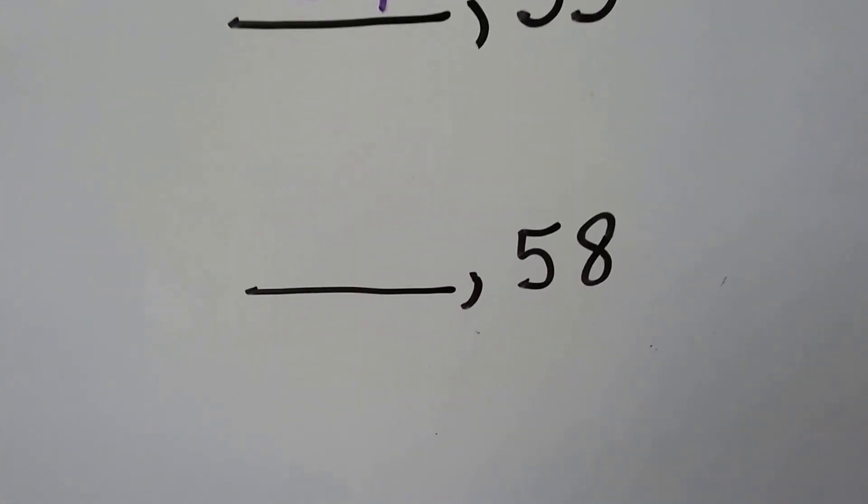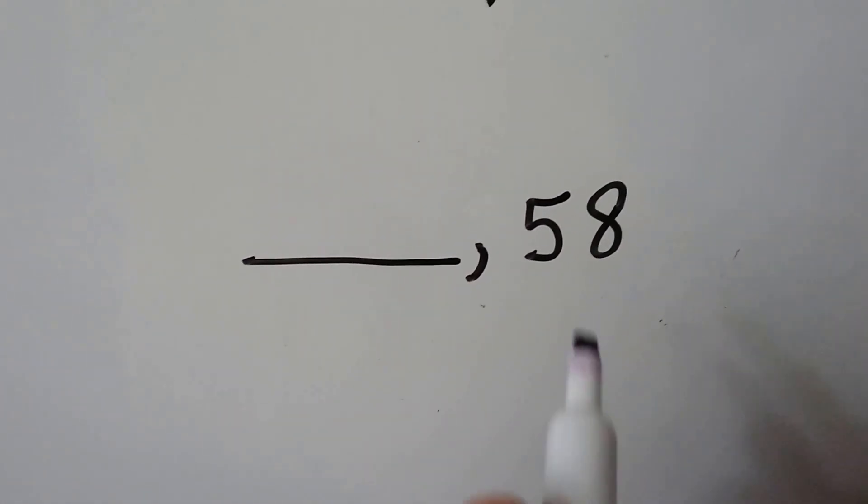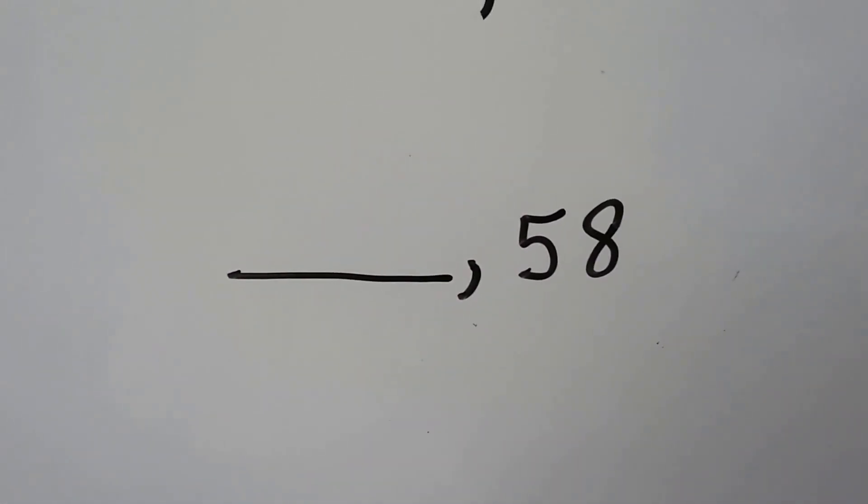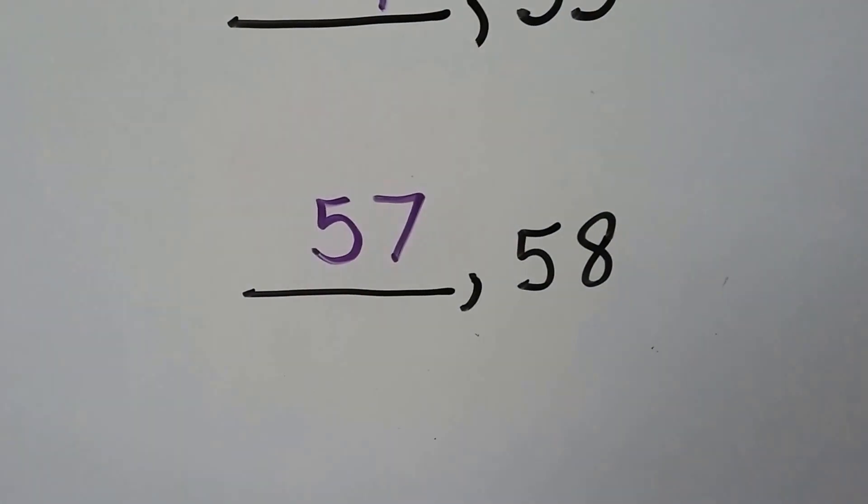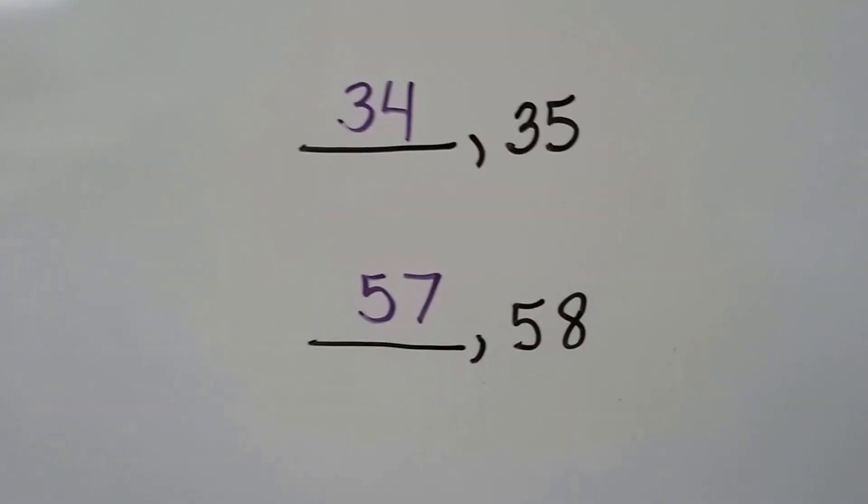What number comes before 58? What number comes before eight? A seven, so it would be 57. Those are the numbers that come before.